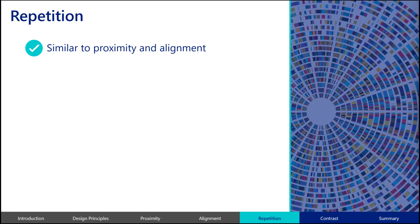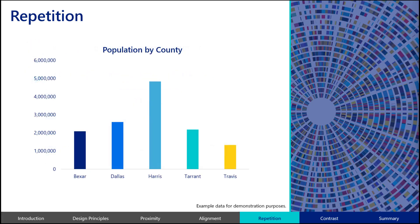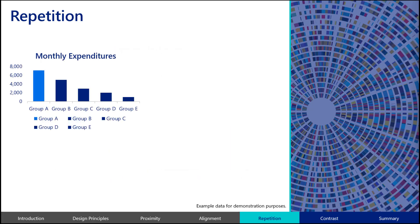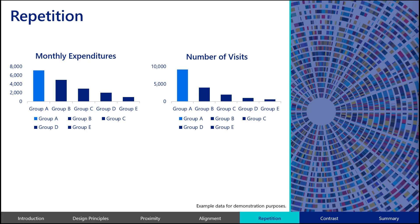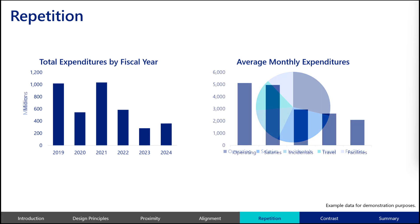Aspects of repetition can be found in the proximity and alignment principles. However, repetition may also be achieved by the consistent use of colors, shapes and sizes, lines, graphic elements, textures, or fonts to represent the same thing across your charts and graphs. For example, if Travis County is represented by the color yellow in one graph, it should be represented with yellow in all graphs where it appears on your dashboard. If you present significant data points in bright blue in one visualization, use that same style for presenting significant data points in all your visualizations. If you use a bar or column chart to represent expenditures in one instance, all visualizations representing expenditures should also be in the form of a bar or column chart if possible.